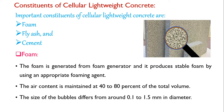The foam is generated from a foam generator, which produces stable foam using an appropriate foaming agent. The air content is maintained at 40 to 80% of the total volume — meaning 40 to 80% of whatever volume is prepared consists of air.